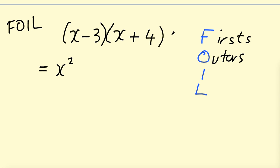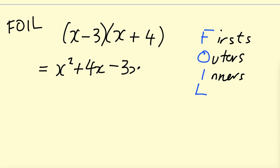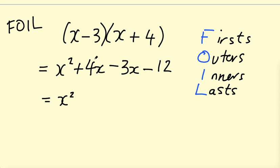The O stands for Outers — the terms on the far edges: X on the left and plus 4 on the right, so X times 4 gives plus 4X. The I stands for Inners — the terms closest together: minus 3 and X, giving minus 3X. The L stands for Last — the last terms in each bracket: minus 3 and plus 4, giving minus 12. Now simplify: X squared, plus 4X minus 3X gives plus X, minus 12. So the answer is X squared plus X minus 12.